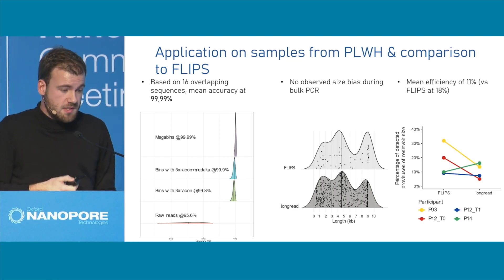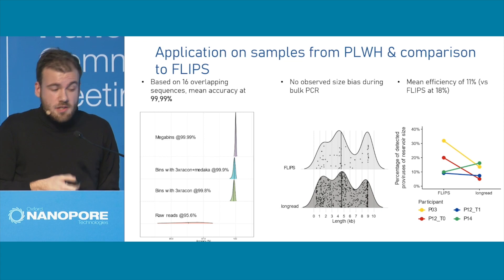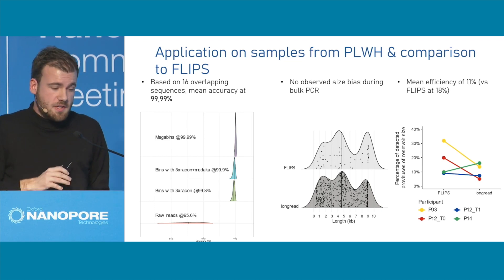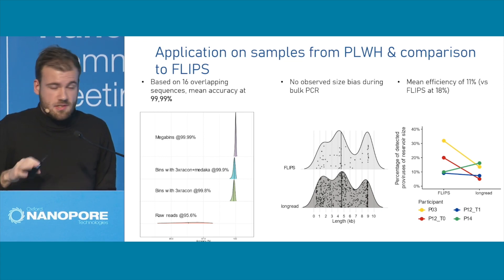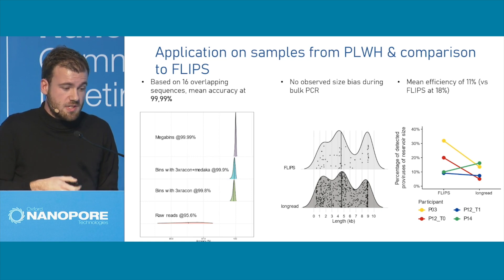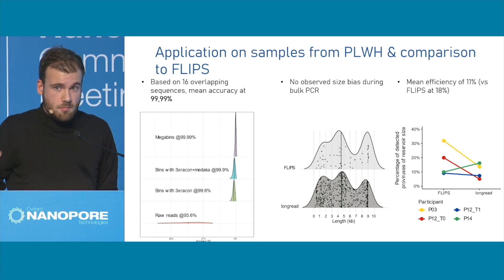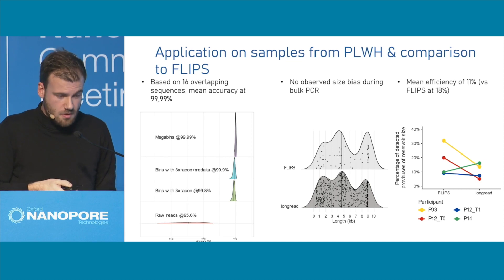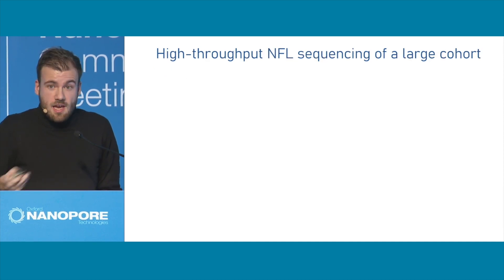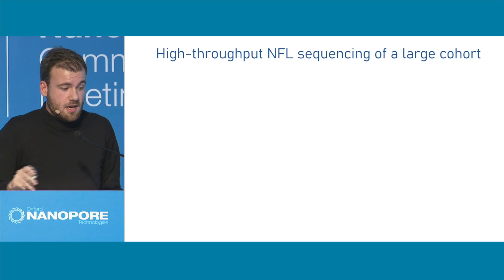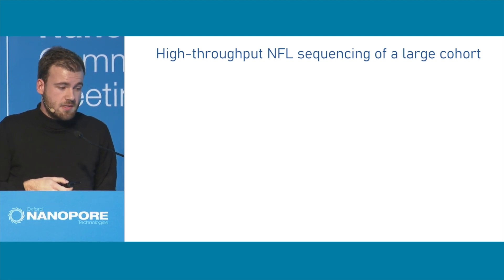We don't observe any biases in the size of the proviruses detected, which is important — we don't want to recover only short sequences. There's no significant difference in size distribution. We do observe a slightly lower efficiency, but it's not significantly different. We're still detecting around 11% of our HIV viruses from the input template.